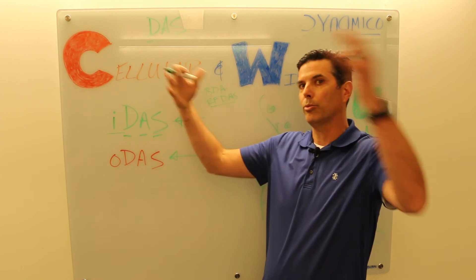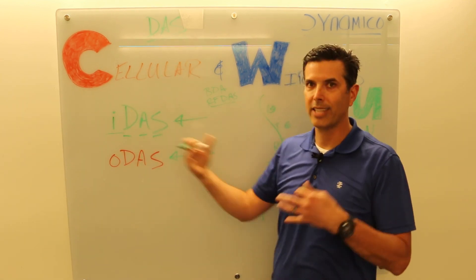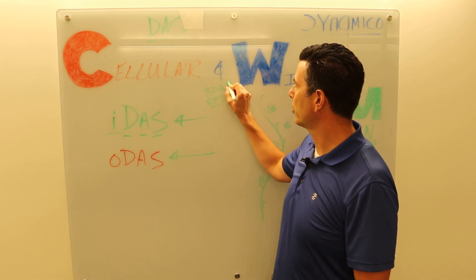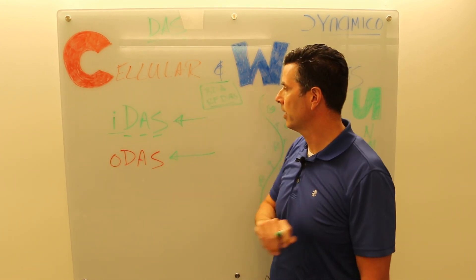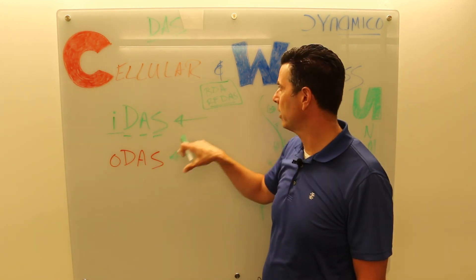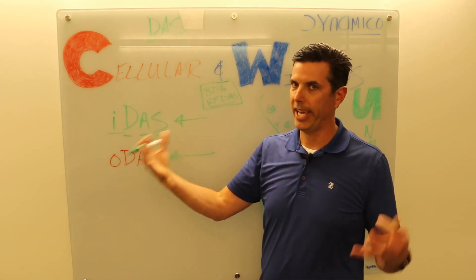And then you distribute it throughout the building, stadium, huge library, office park, whatever it might be. Those are your primary kinds of DAS: BDA being your outdoor off-air feed, radio feed being hey here's your radio and we're going to use that signal inside our building.